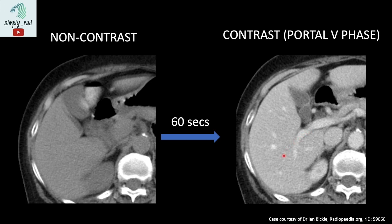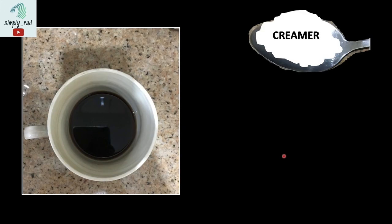If we wait for 60 seconds after the injection of contrast, we can catch the liver at a time when the contrast is already in the portal vein and in the liver. Therefore, this is the time when the liver is really, really bright. Going back to our analogy — if the black coffee is the unenhanced liver, we can add a large tablespoon of creamer to represent the liver receiving three-fourths of its blood supply, making it very bright.